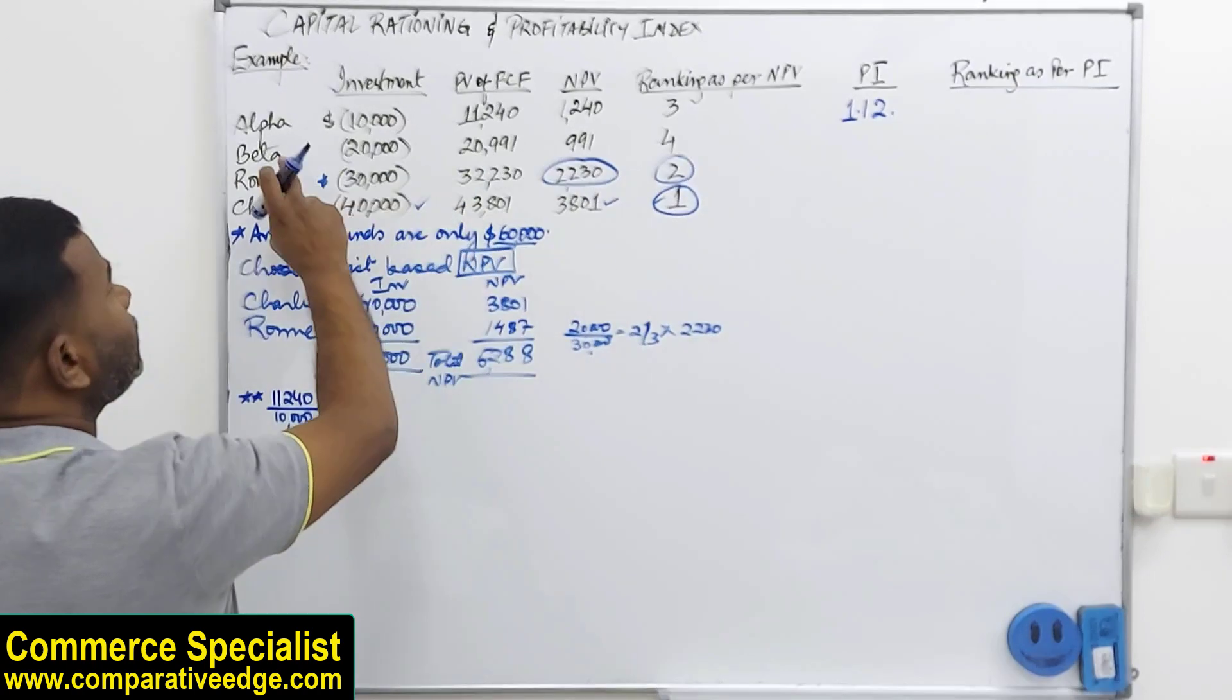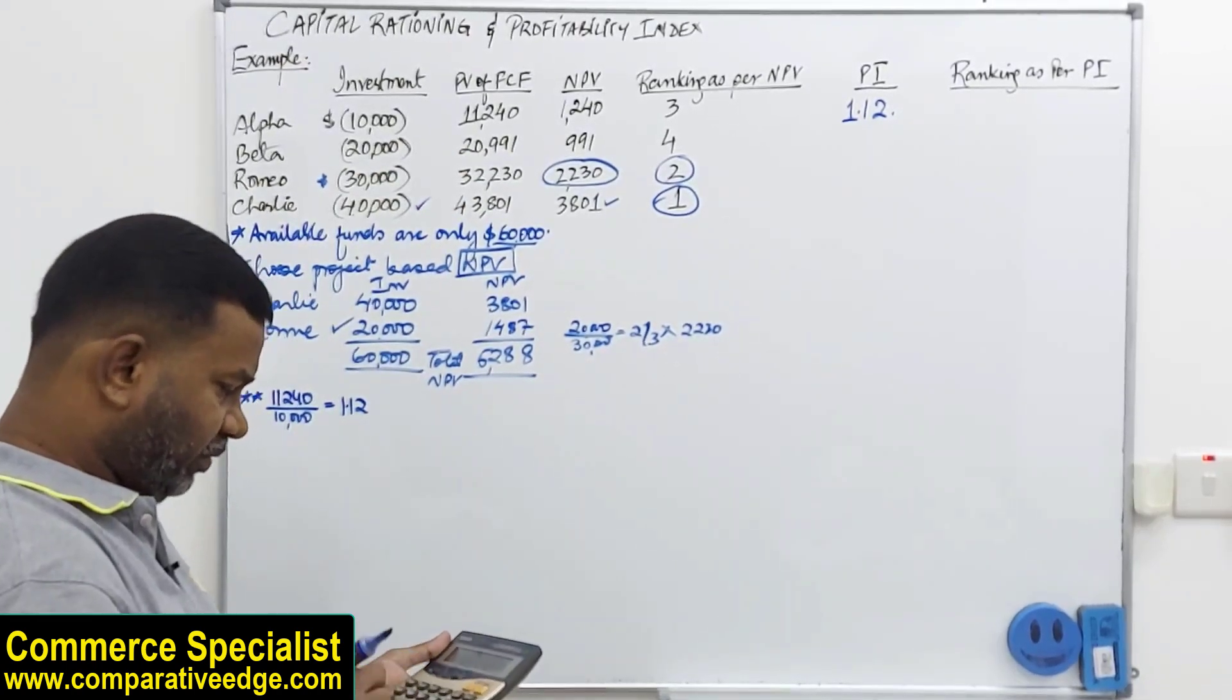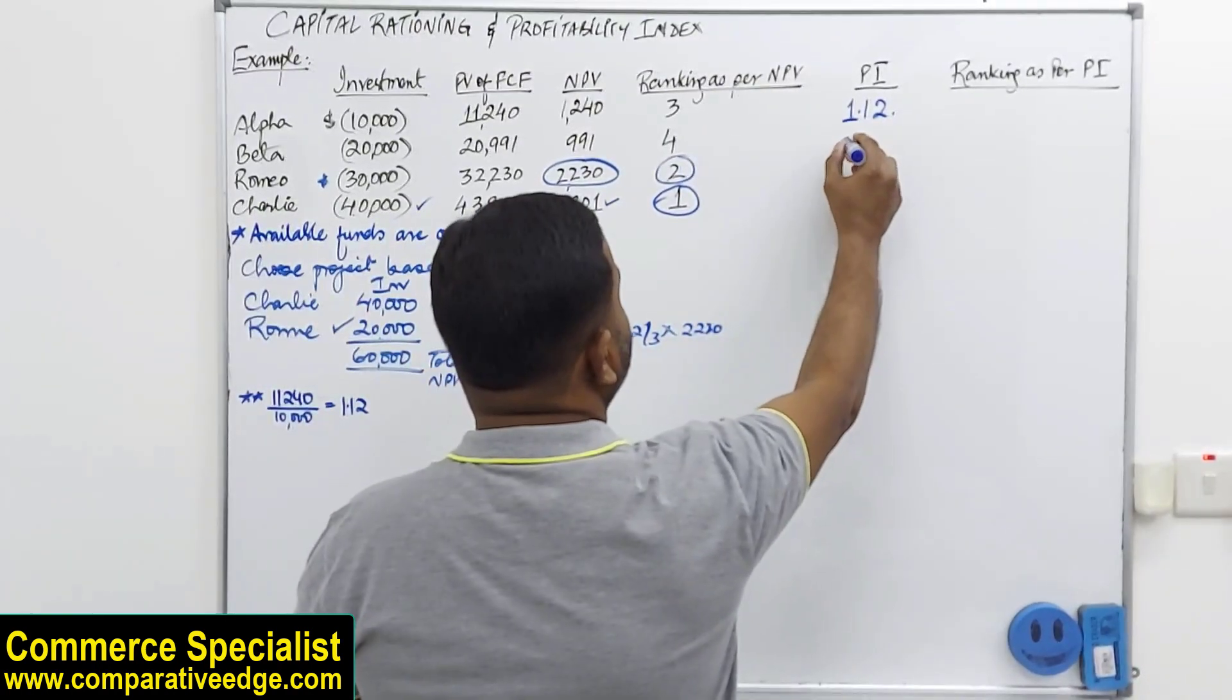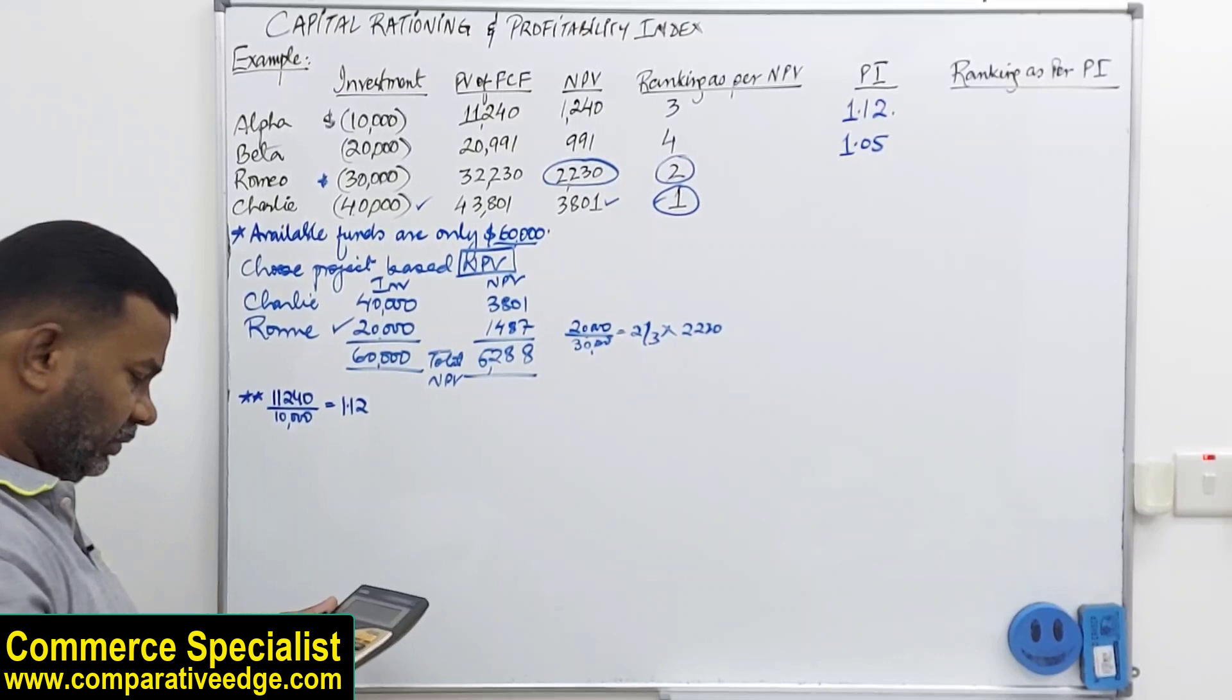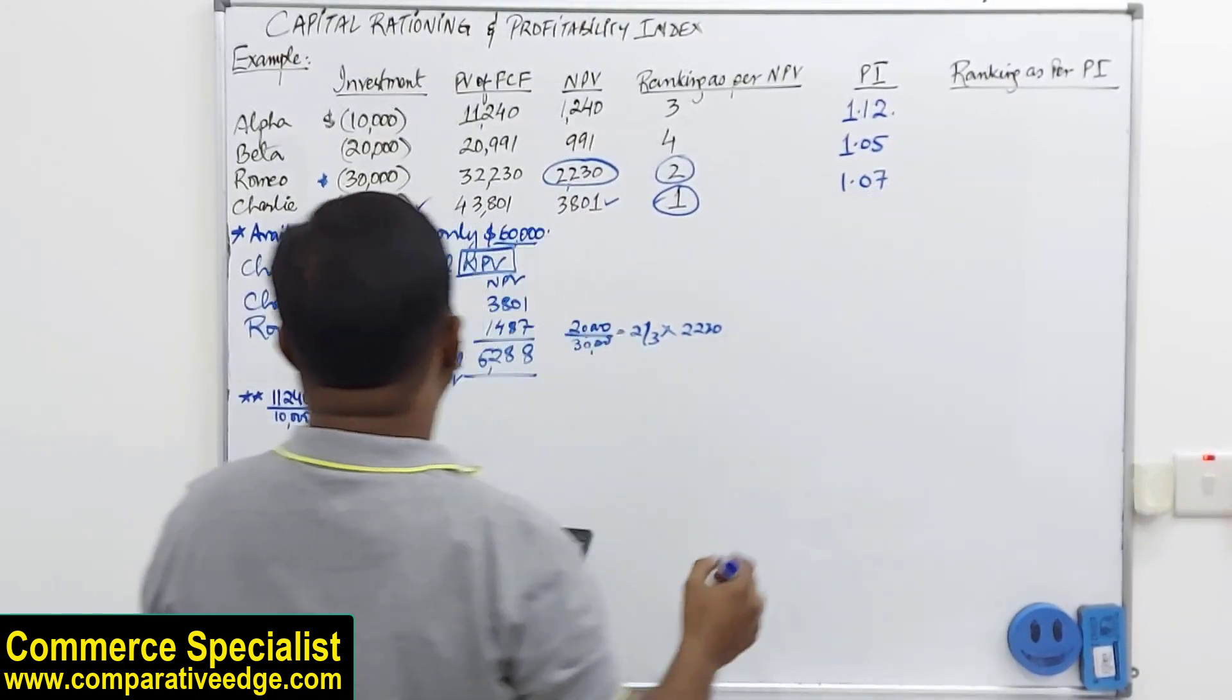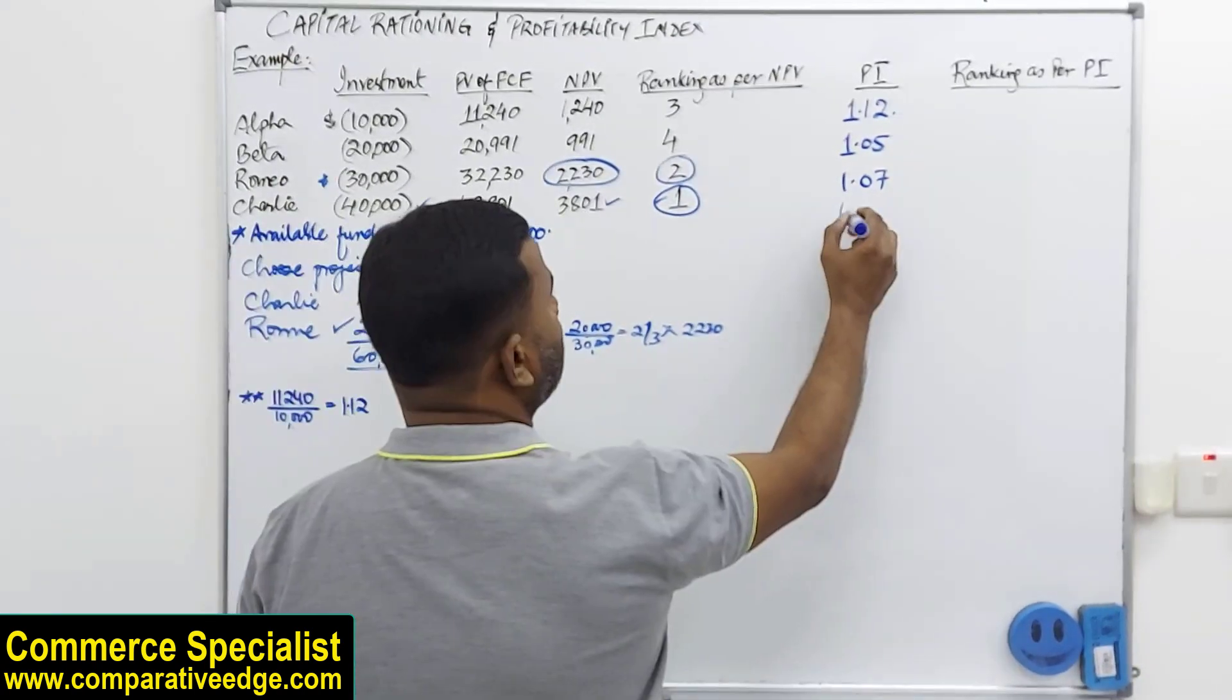Similarly, if I do the same for the second project, Beta, the present value of future cash flows is 20,991 divided by 20,000, so 20,991 divided by 20,000 will give me 1.05. Likewise for Romeo, 32,230 divided by 30,000 gives 1.07. And finally, 43,801 divided by 40,000 gives me 1.10.